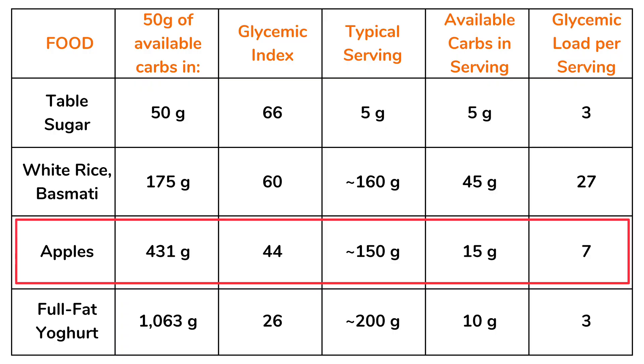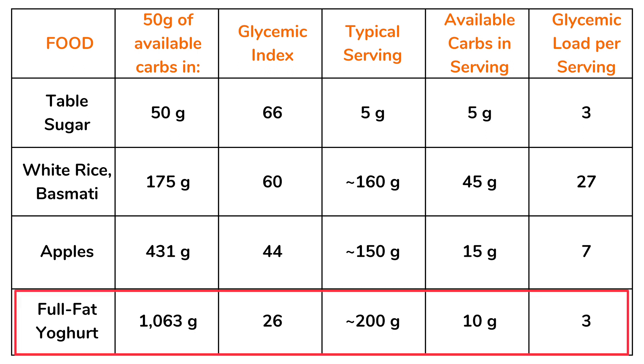One of the reasons nutritionists and dieticians are not excited about refined grains such as white rice or white flour bread is that they are not that different from eating pure sugar — it's just starch, which are chains of pure glucose, easily digested and entering the bloodstream very quickly. Apples have a glycemic index of 44, which seems high, but a serving of about 150 grams contains only 15 grams of available carbohydrates, leading to a glycemic load of just 7. Similarly, full-fat yogurt has a glycemic load of 3 — so you could eat a lot of apples and yogurt and still have a lower blood sugar response than from a single serving of white rice.